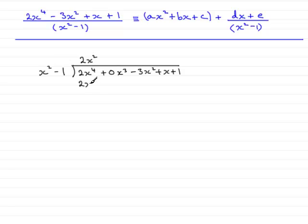So write that directly underneath that term. And then I would have 2x squared times minus 1 which is minus 2x squared. You've got to be careful here, it's got to go under this term here, so that's minus 2x squared.